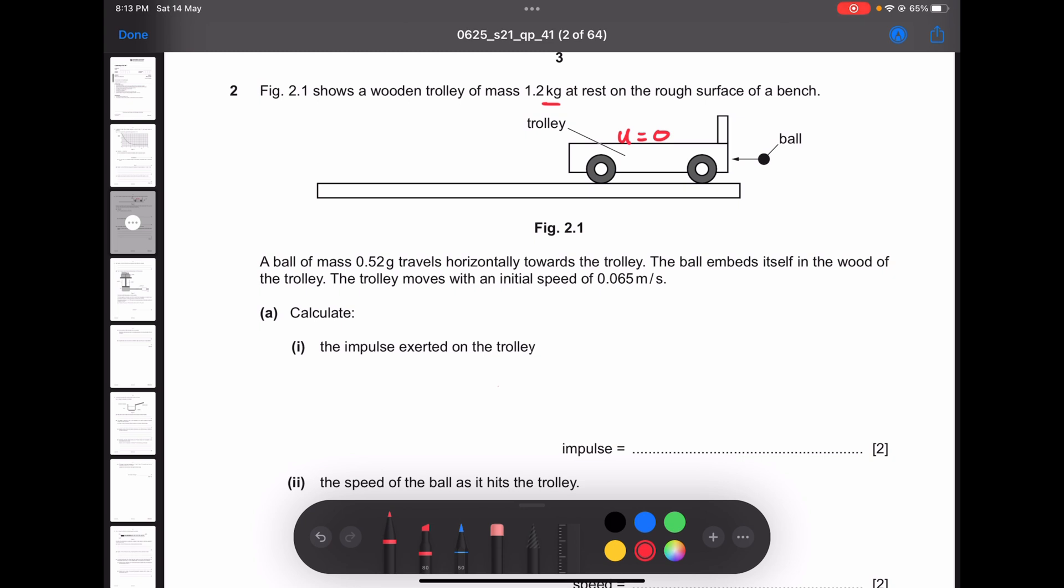The trolley moves with an initial speed 0.065 meter per second, this is final velocity of the trolley. For part (a), calculate the impulse exerted on the trolley. According to impulse-momentum theorem, I, impulse, equals delta p, the change in momentum.